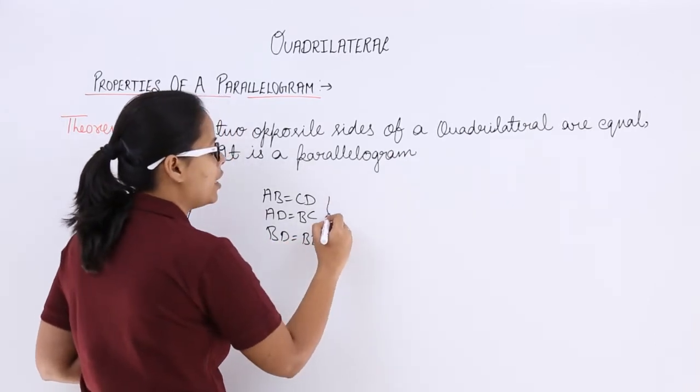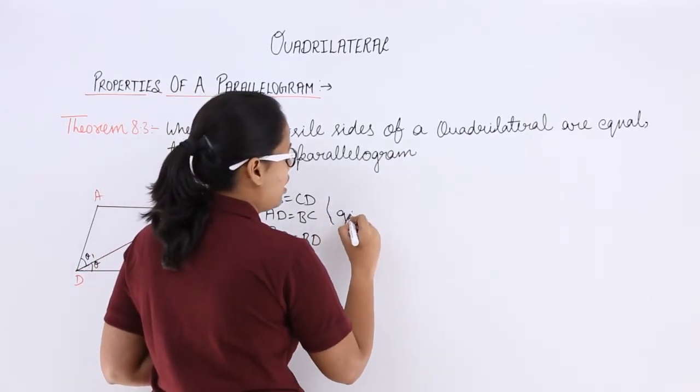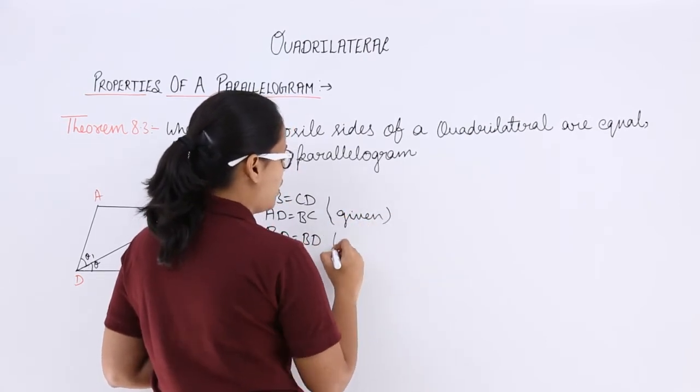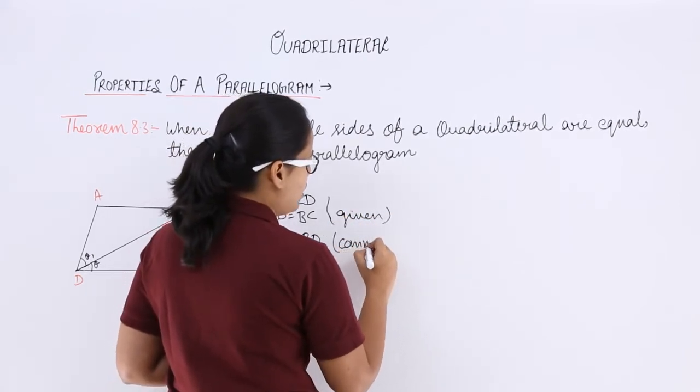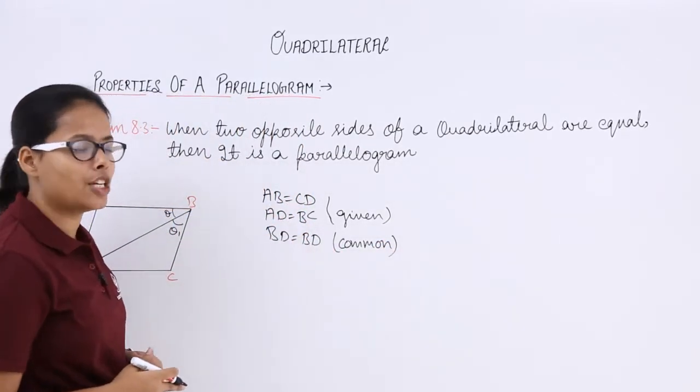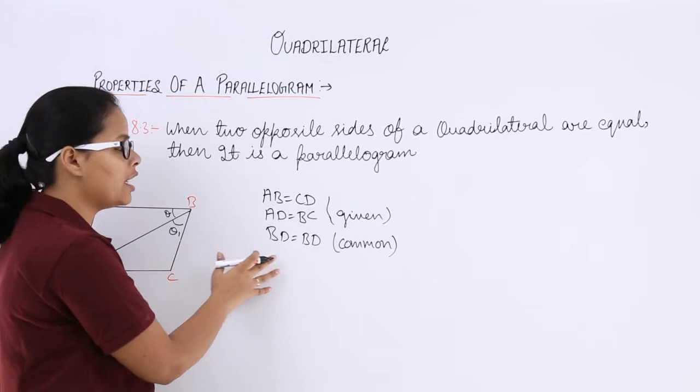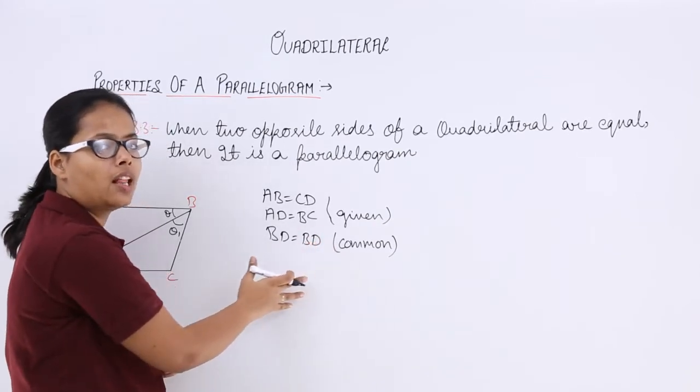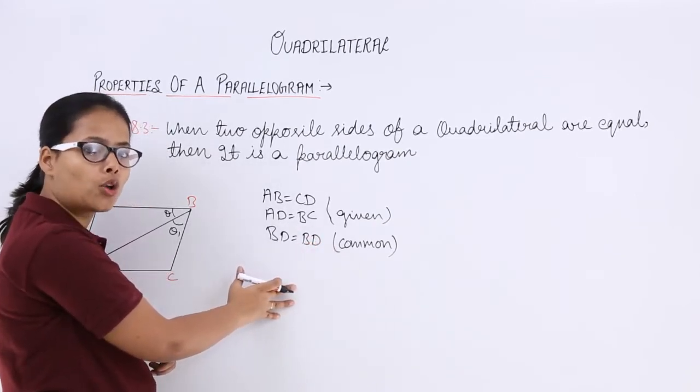This has been given to you that opposite sides of a quadrilateral are equal and this is a common branch. So, now from all of these conditions when three sides of a triangle are equal to the three sides of other triangle, then those two triangles are congruent to each other.